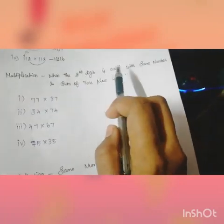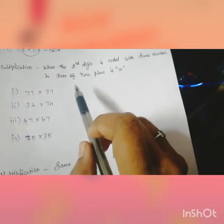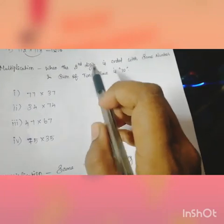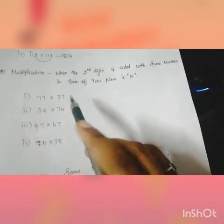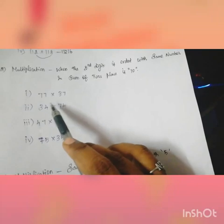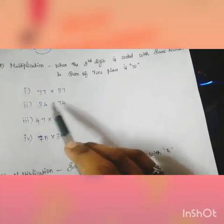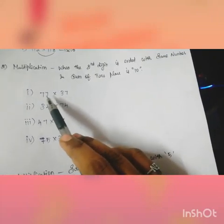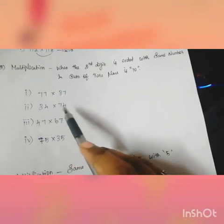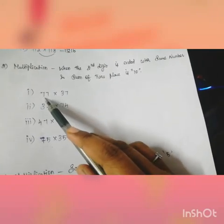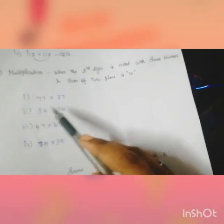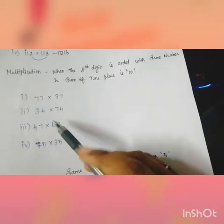Next, second: the number is the same and the sum of tens place is 10. First, look at the number. The number is equal. Second, the number is the same. First, the number is the same. The number is 10. So 7, 7, 4, 5, 5. This is equal. So first, the number is 10. 6, 4 is 10.